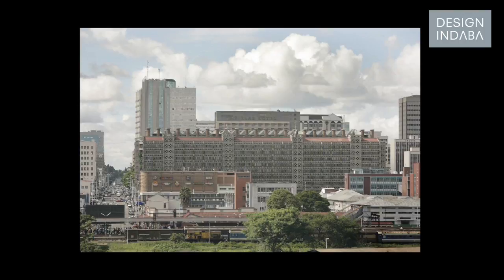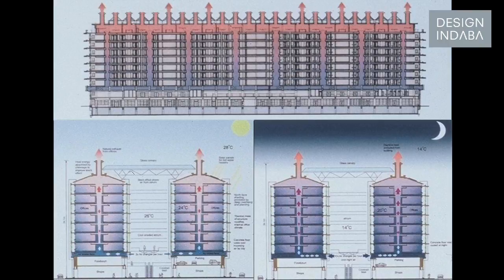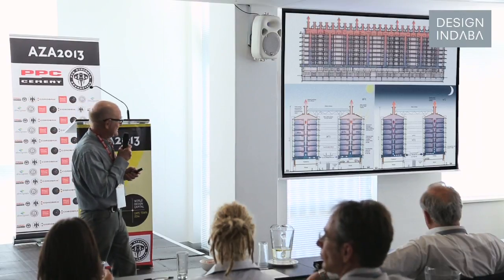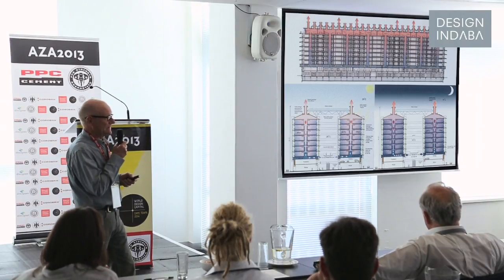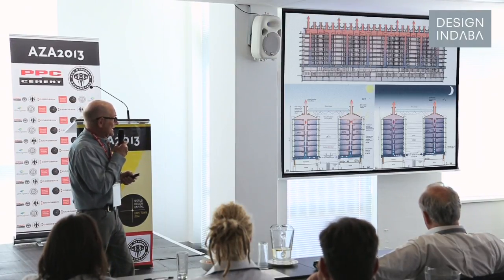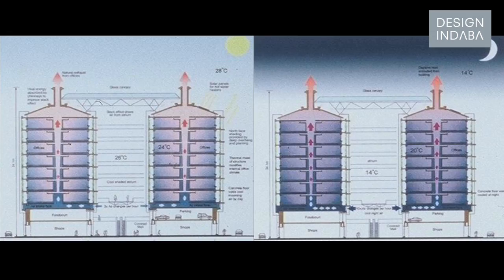In other words, it's not form follows function — it's form follows process. Eastgate was really based on my primitive, rather simplistic idea of how a termite mound worked. It was about through-draft, about using night air as the cooling system, because we have a 10-degree diurnal variation. We just have two fan speeds: we push air through the building at a much faster rate, cool down the structure, and use the structure as a thermal sink.